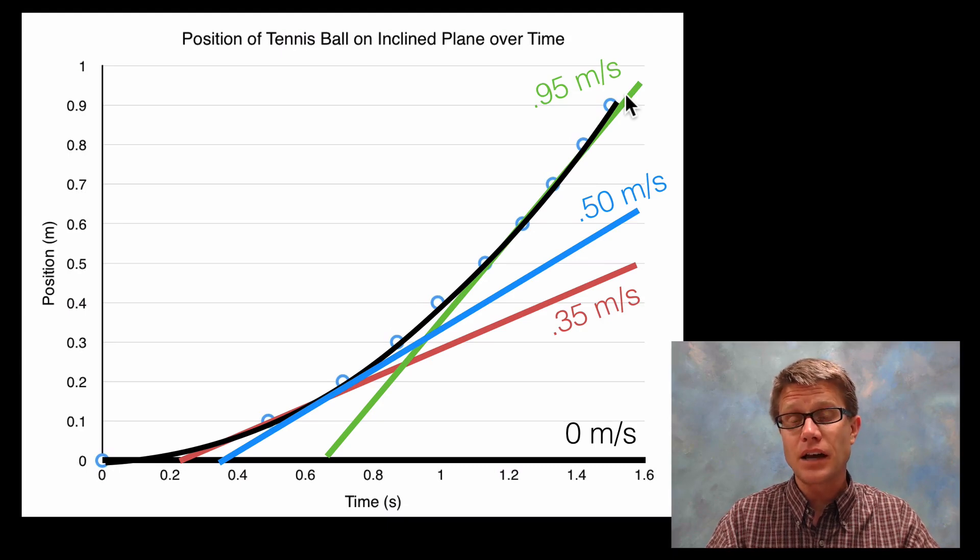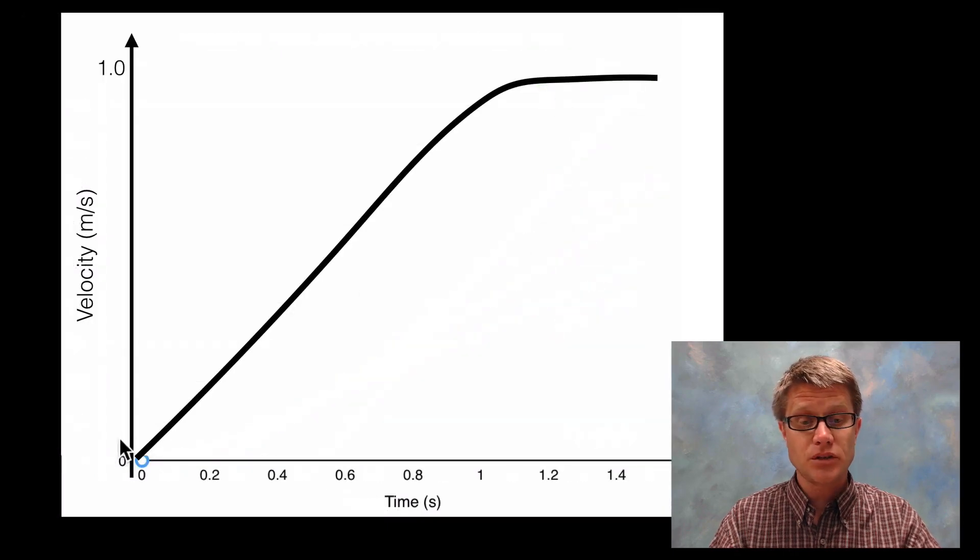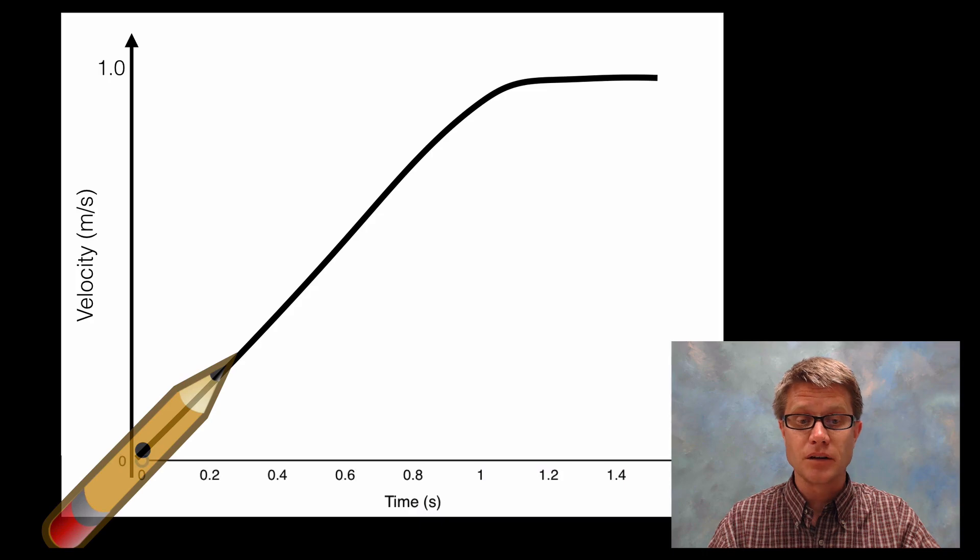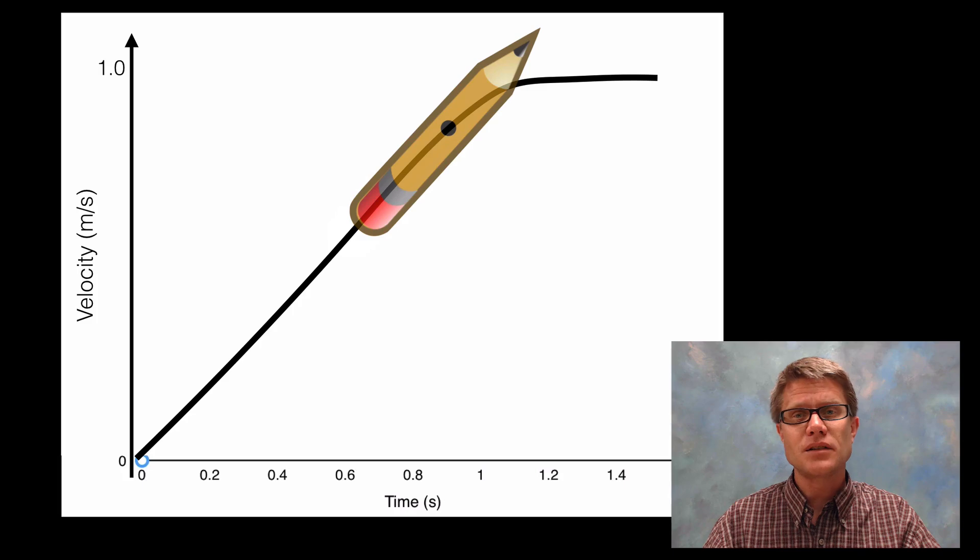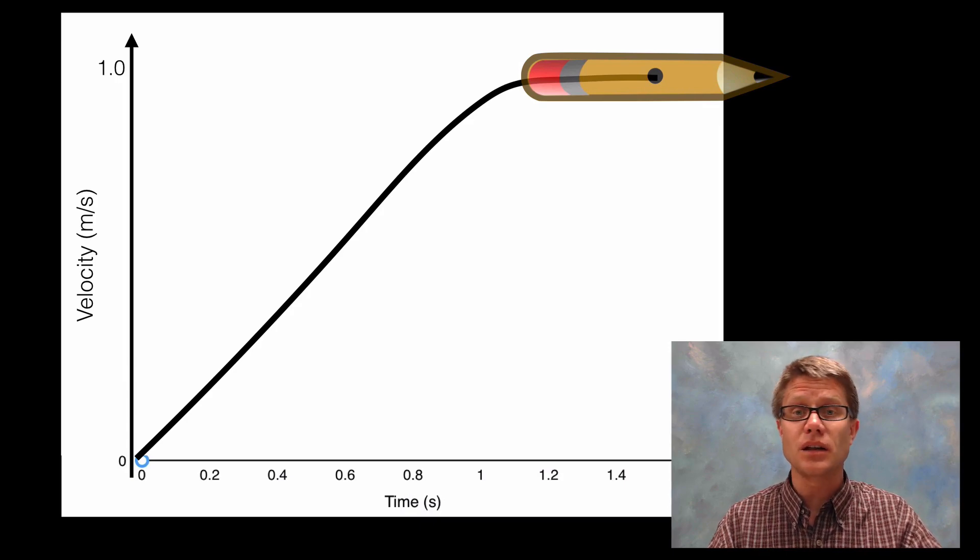Imagine if we take that data and construct another graph - a velocity versus time graph. It would look like this: we started with velocity of zero, then that velocity increased until we got velocity of around 0.95. The slope of a velocity versus time graph gives you acceleration. At the bottom it's got a positive slope, meaning it's accelerating. As I graph it through there, the slope is not changing, so it has constant acceleration during that time. Then the slope eventually levels off - it doesn't mean it's not moving anymore, but that it's not accelerating anymore. The acceleration goes to zero.